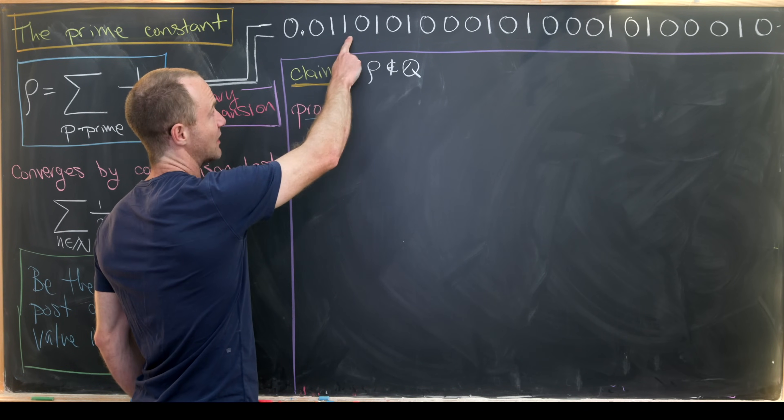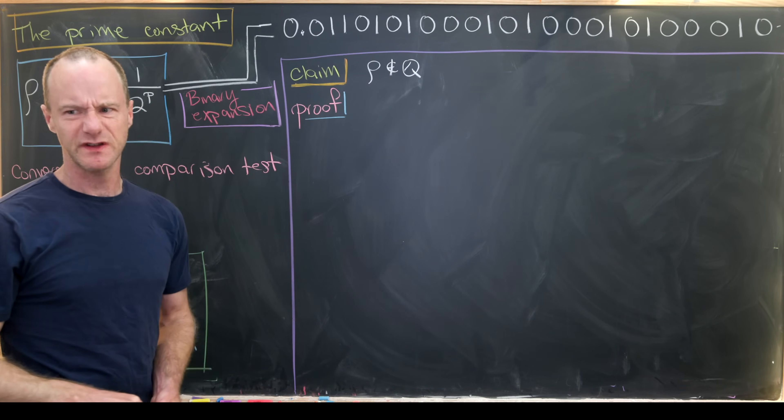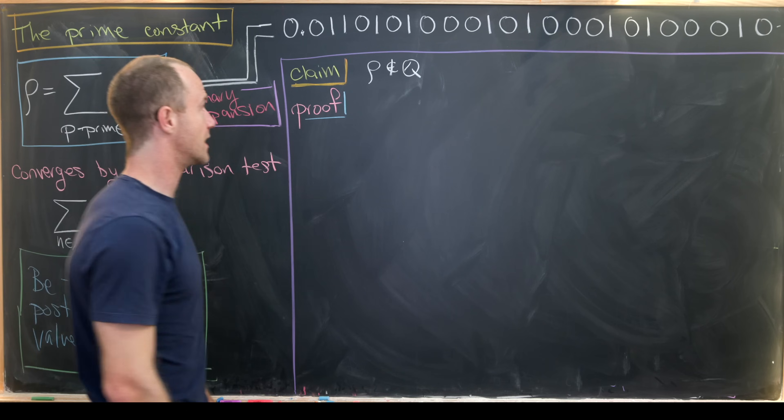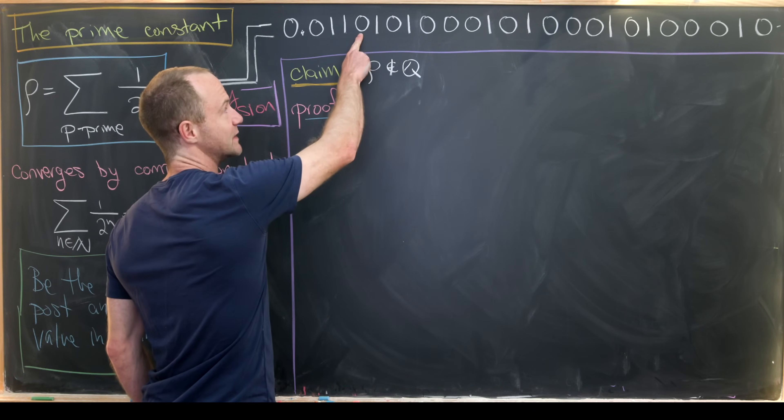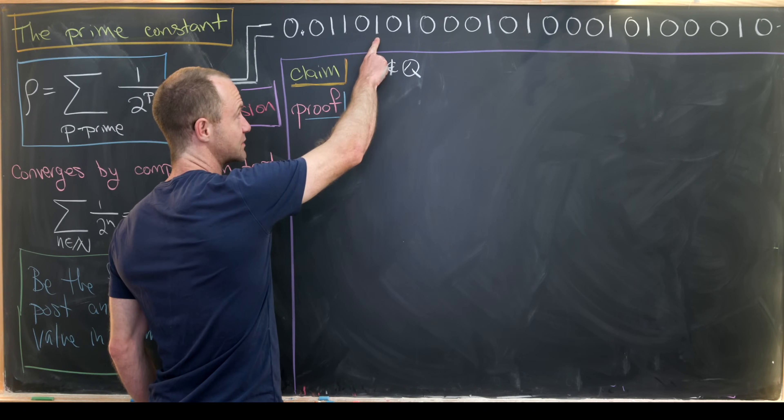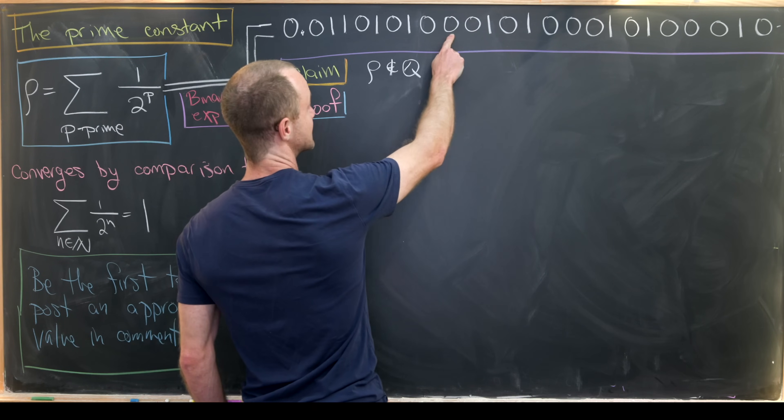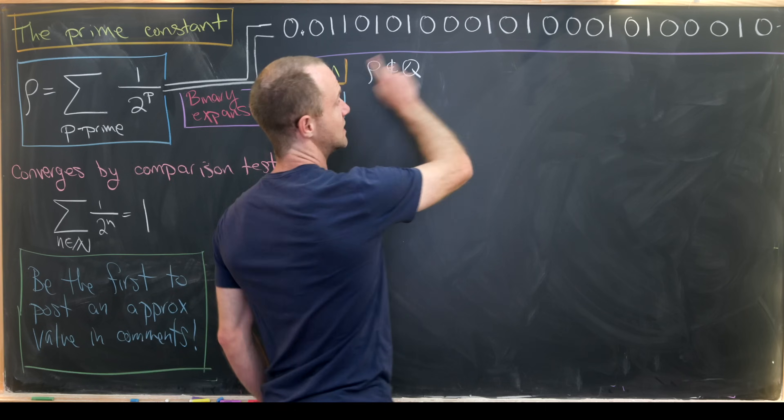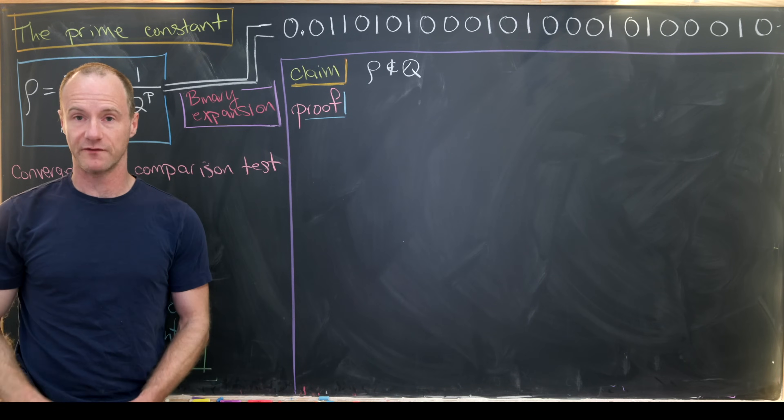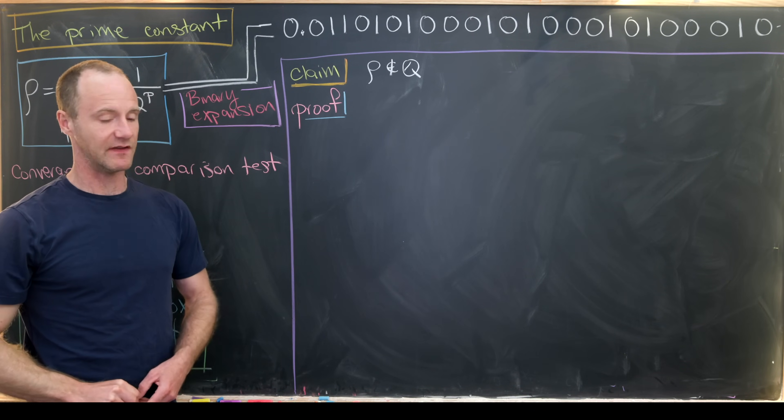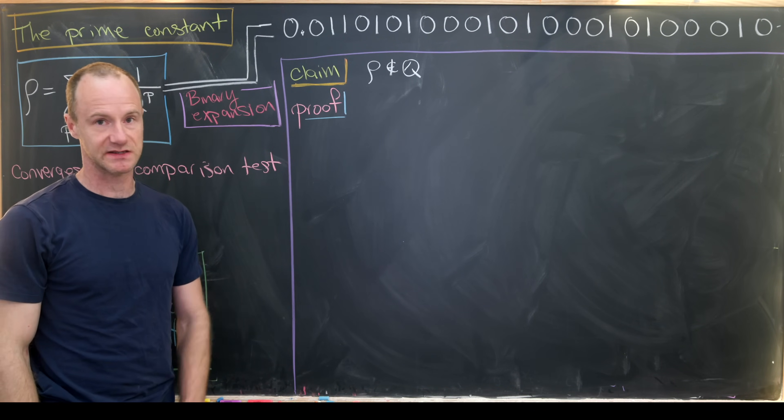So we know that 1 is not prime. So that means we get a 0 right there. 2 is prime and 3 is also prime. So we get a 1, 1 there. Those are the only primes that are separated by 1. 4 is not prime. So we get a 0. 5 is prime. 6 is not. 7 is. And then we have 8, 9, 10, 11. So notice we've got 1s at all of the prime locations and then 0s at all of the composite locations.